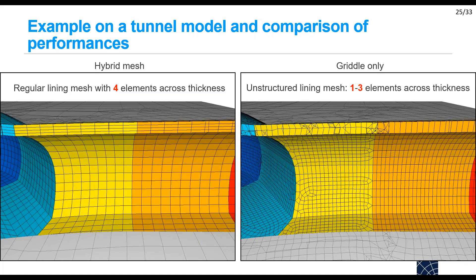Another slide shows the same point: for a hybrid mesh you have a regular mesh with four elements across the thickness, whereas for Griddle you have a lining mesh where the number of elements across the thickness ranges between one and three. In some places there is only one element, which is definitely not enough. So not only is the Griddle-only mesh larger, but it will also be less accurate in terms of results due to the poor discretization of the lining.